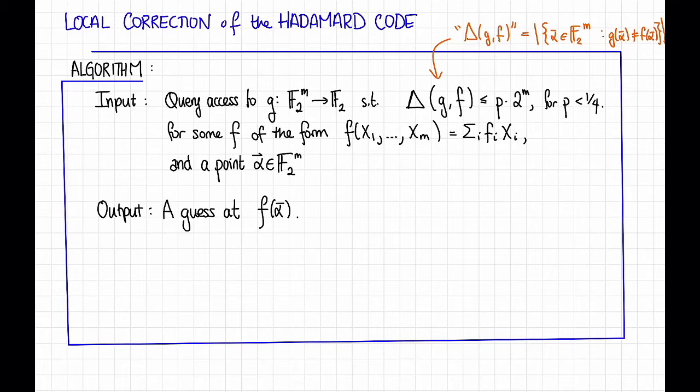Okay, so this is the problem we're going to solve. Here's how we're going to do it. Very simple algorithm. First, we're going to choose some β in F₂^m at random. Then, we're going to return g(β) plus g(β + α).